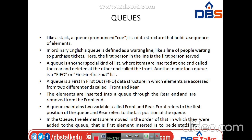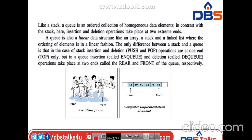Another name for queue is First In First Out — FIFO. A queue is a FIFO data structure in which elements are accessed from two different ends called front and rear. In queues, the elements are inserted through the rear end and removed from the front end. The queue maintains two variables: front, which refers to the first position of the queue, and rear, which refers to the last position of the queue.